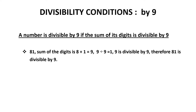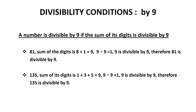Consider 81. The sum of the digits is 8 plus 1 equals 9. Now 9 is divisible by 9, so the number 81 is divisible by 9. The number 135: the sum of its digits is 1 plus 3 plus 5 equals 9. Therefore 135 is divisible by 9.